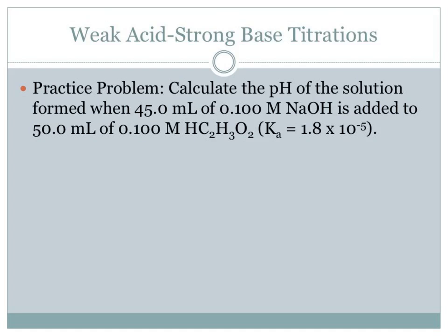Let's do a practice problem. Calculate the pH when 44.5 milliliters of 0.1 molar NaOH is added to 50 milliliters of 0.1 molar acetic acid. We haven't added quite enough sodium hydroxide for there to be equal moles of acid and base — there's a little more weak acid than base added. So we're not quite to the equivalence point; we're in stage 2.